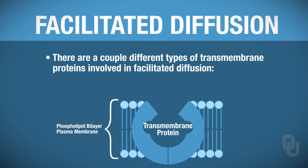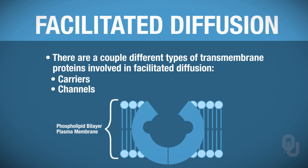There are a couple of different types of transmembrane proteins used in facilitated diffusion. Those transmembrane proteins include carriers and channels, and both types can be used in facilitated diffusion.